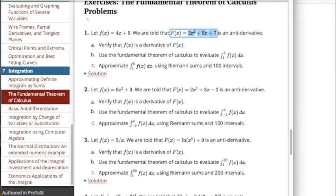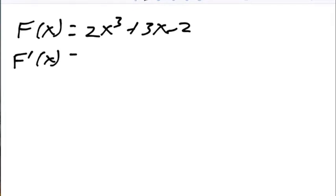I'm going to look at problem number 2. F of x equals 6x squared plus 3 and capital F is 2x cubed plus 3x minus 1. So looking at it, capital F of x is 2x cubed plus 3x minus 2. Capital F prime of x is then 6x squared plus 3, and that's little f of x.